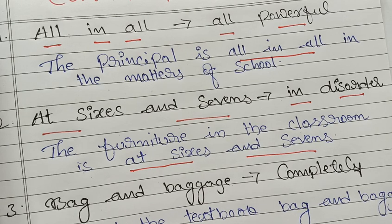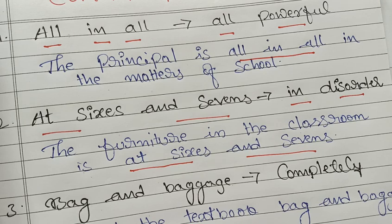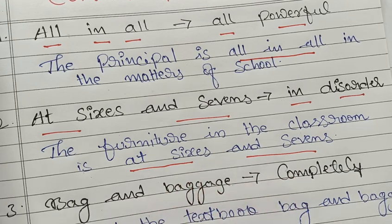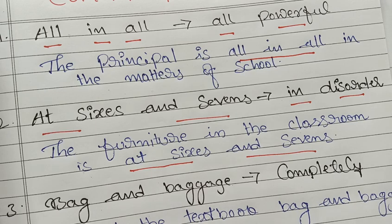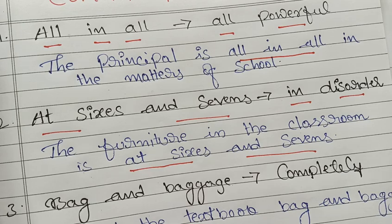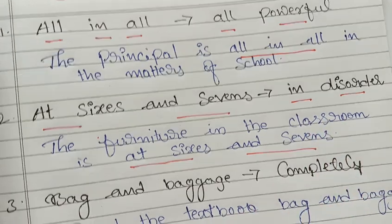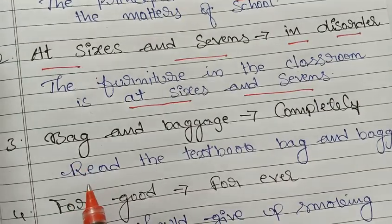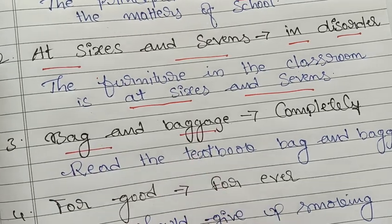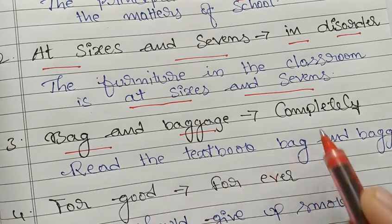When you come across phrases being used like this, don't be surprised. 'The furniture in the classroom is at sixes and sevens' simply means the furniture in the classroom is in disorder — the classroom is not in proper order. Sometimes we can also say 'The dress code of the students is at sixes and sevens,' which means it is in disorder.